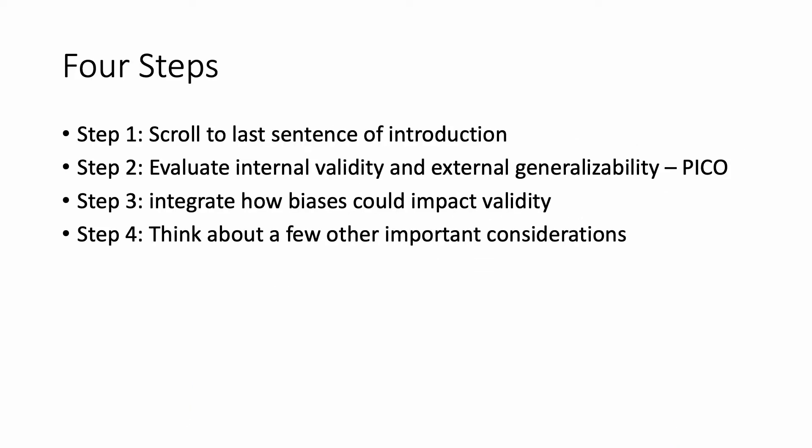I've boiled it down to a four-step process. Step one: you've got the article in front of you — scroll down to the last sentence of the introduction, and there you'll find the research question. Once you have the research question, you can use the PICO framework to assess internal validity and external generalizability. Step three: integrate how biases could impact validity. And step four: there are a few other considerations.